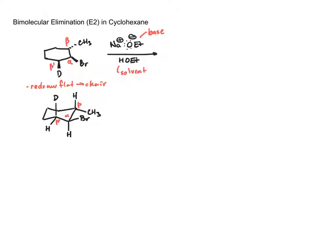As we can see, the beta prime and beta hydrogens are not in the correct relationship to do the E2 mechanism. It might be useful to do a Newman projection to really prove to ourselves that this is the case. Let's go ahead and do that for both scenarios.